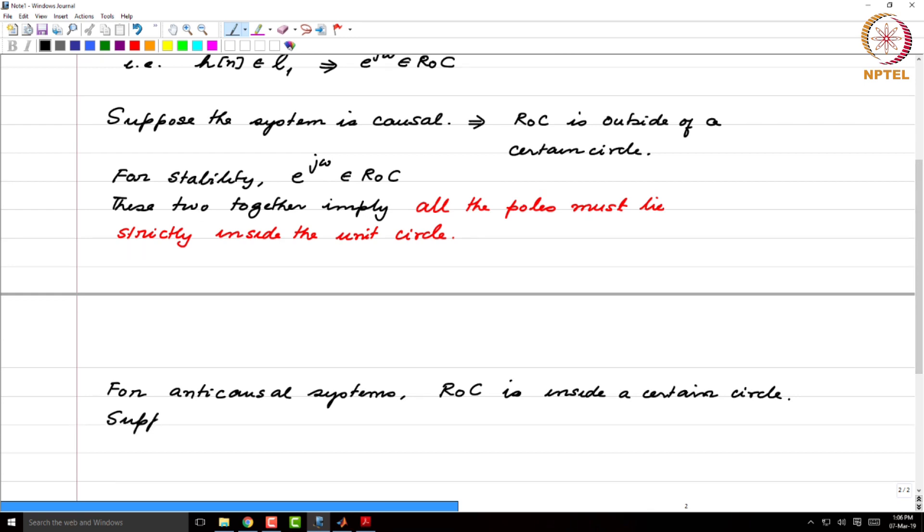Suppose we also want stability. Then these two together imply all poles must be strictly where? Outside the unit circle.